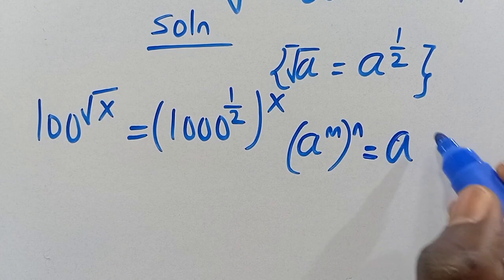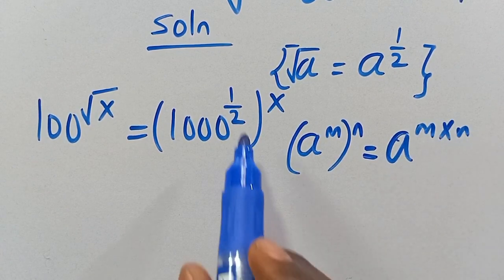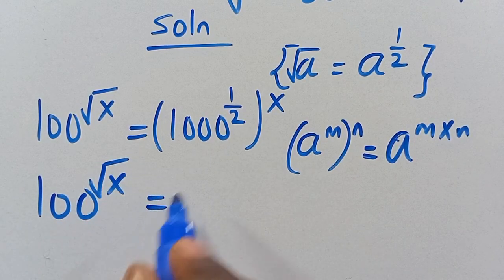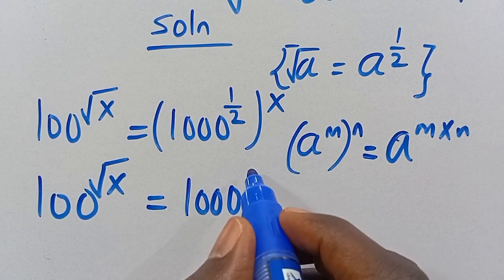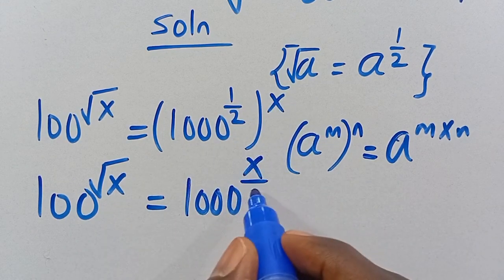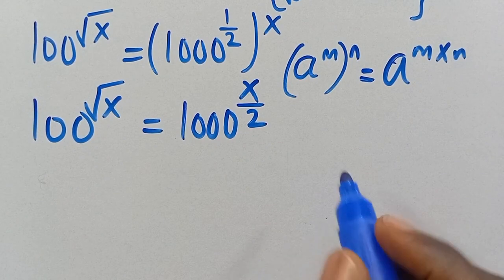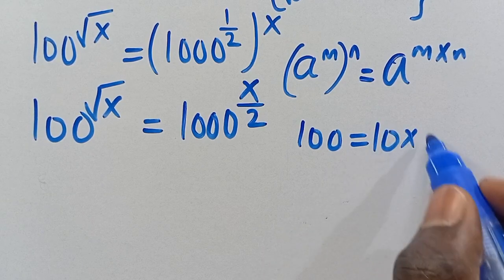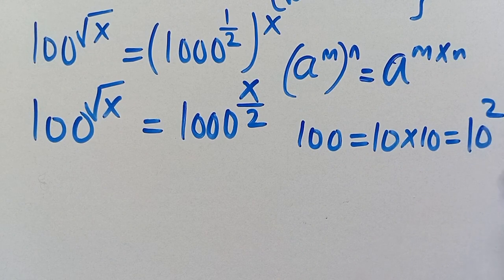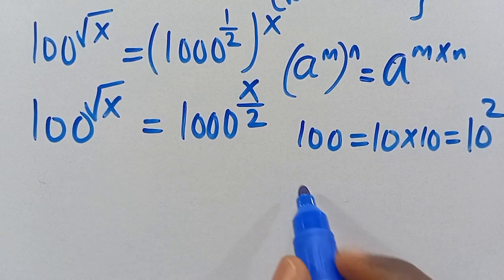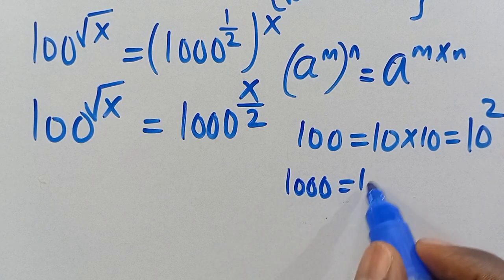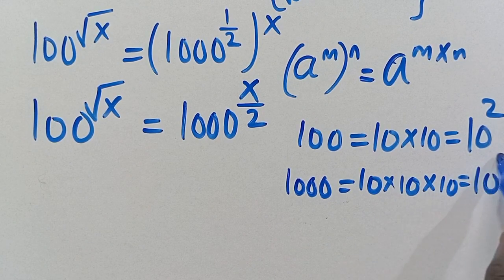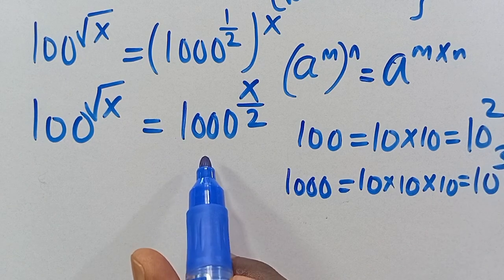Now recall the power rule: when we have (a^m)^n, this gives us a^(m×n). Applying this, the right side becomes 1000 to the power of X/2. We also note that 100 equals 10×10 = 10² and 1000 equals 10×10×10 = 10³.